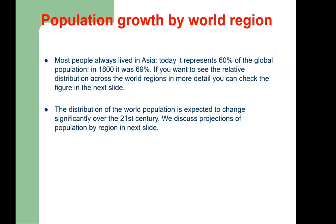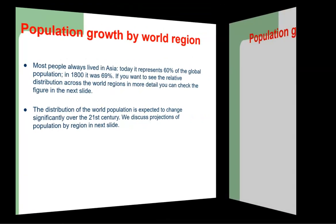Most people have always lived in Asia, which represents 60% of the global population today. In 1800 it was 69%. The distribution of the world population is expected to change significantly over the coming century. Projections of the population by region will be discussed in the next slide.